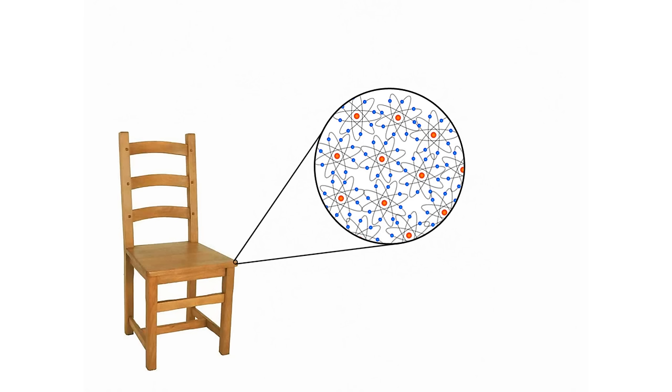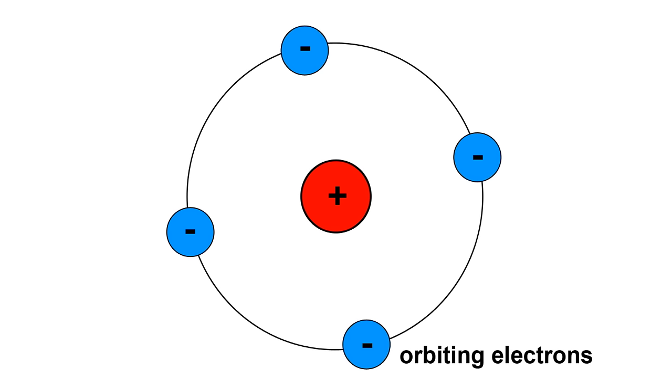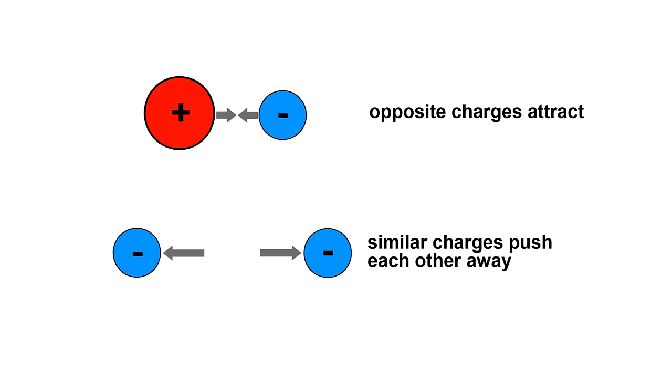So you probably know that everything around you is made up of tiny particles called atoms. The simplified model of an atom has a positively charged center called the nucleus, and you have negatively charged electrons orbiting around it. The terms positively charged and negatively charged are arbitrary and the important thing to know is that things with opposite charges attract each other, and things with the same charge repel each other.